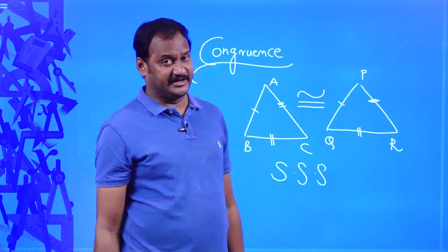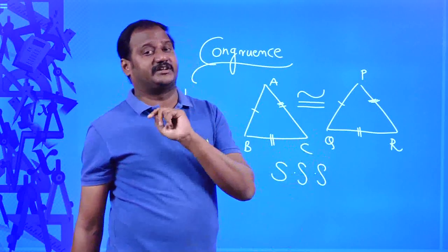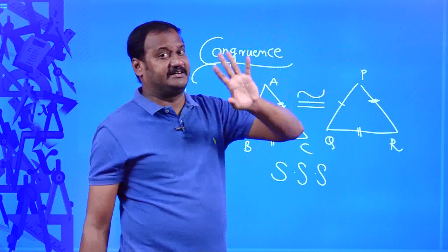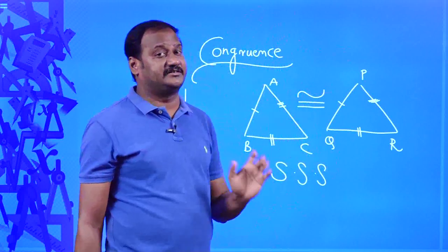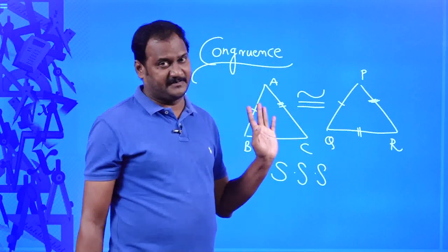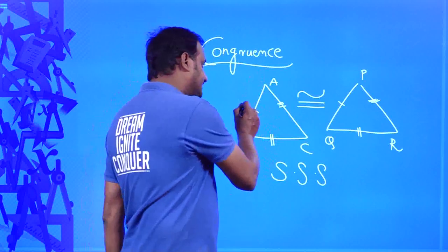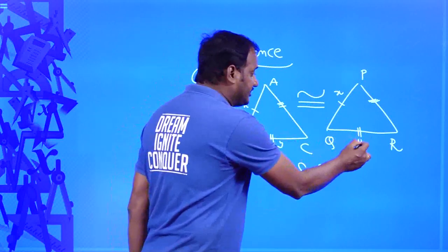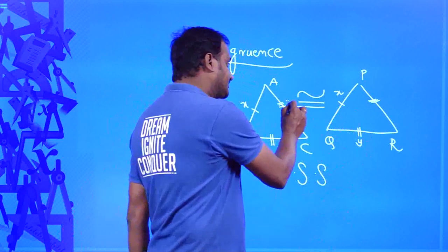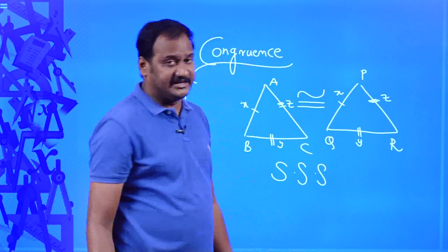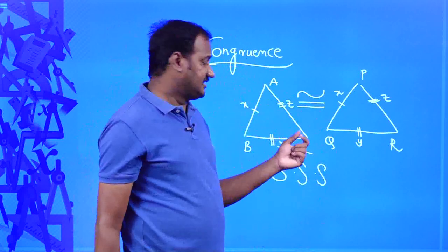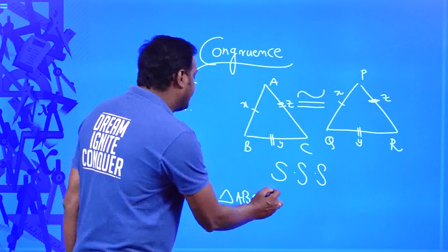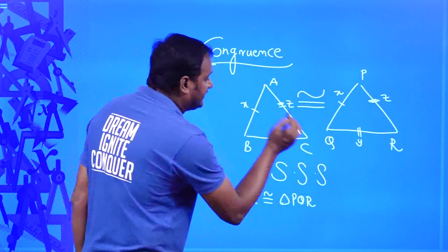SSS congruence means: if three sides of one triangle are respectively equal to the corresponding three sides of another triangle, then those two triangles are congruent by SSS congruence. So if AB = X units, then PQ = X units; if BC = Y units, then QR = Y units; if AC = Z units, then PR = Z units — then triangle ABC is congruent to triangle PQR by SSS congruence.